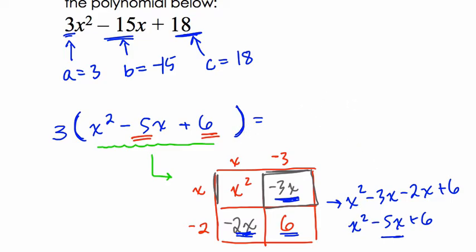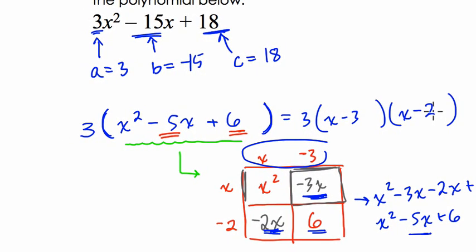So the answer here, what we're looking for, is two binomials that multiply the polynomial below. We can have 3 times x minus 3 times x minus 2. And that would be our final answer. Hope this helped. Thank you.